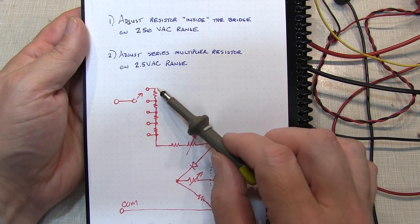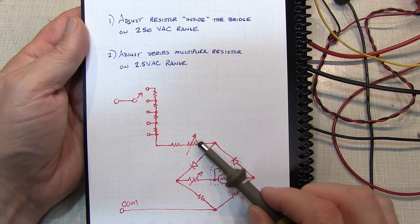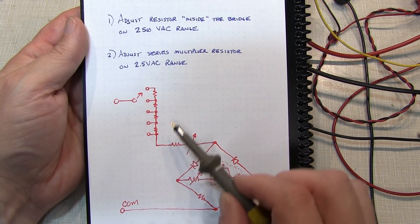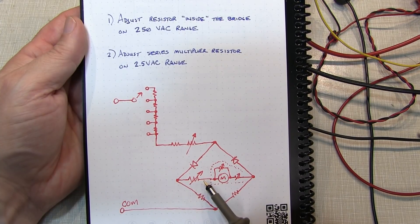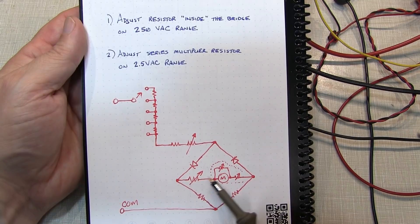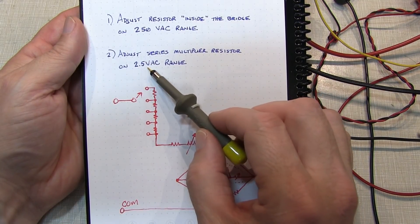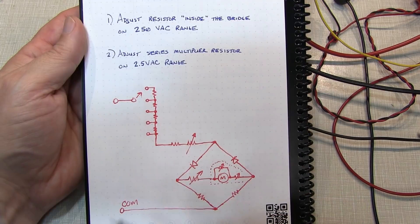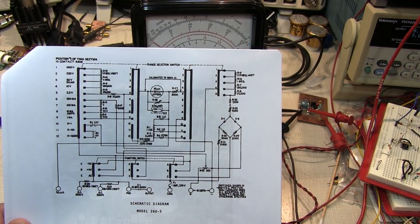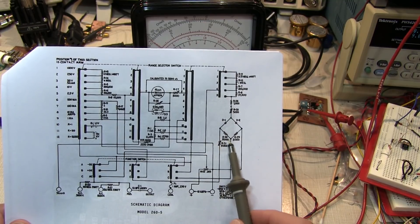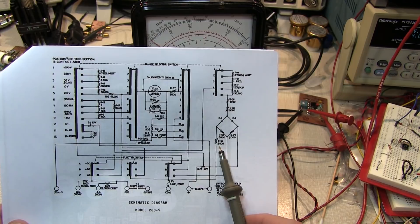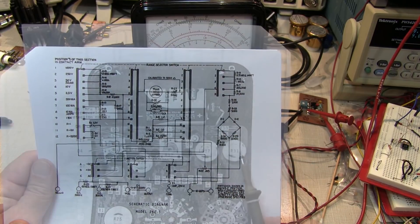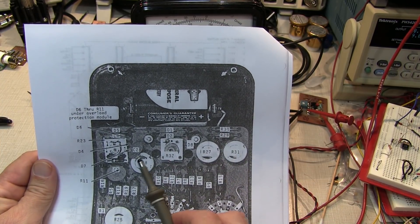Calibration is done in two steps. First, we select the 250 volt AC range, which is the top range here. On the 250 volt AC range, all these resistors are in series, so this resistor is inconsequential. We first adjust this resistor to get an accurate reading on the 250 volt AC range. Once we've done that, we go down to the 2.5 volt AC range and adjust this resistor to get an accurate reading there. On the 5 series schematic, R31 is the first resistor we adjust on 250 volt AC, then R28 on the 2.5 volt AC range.